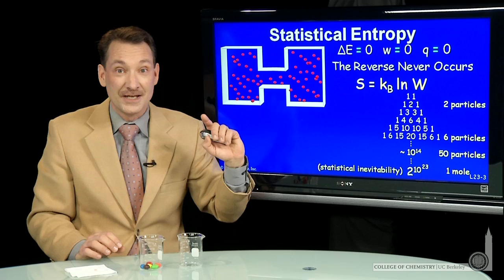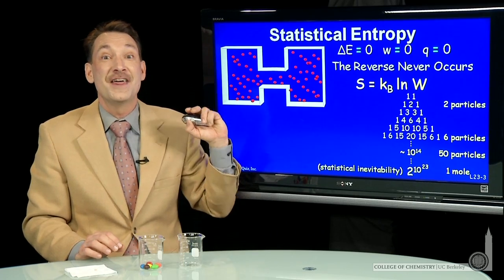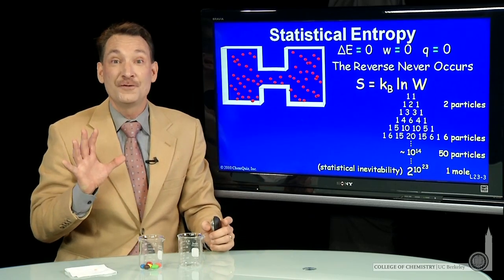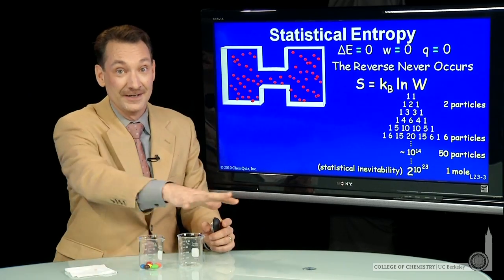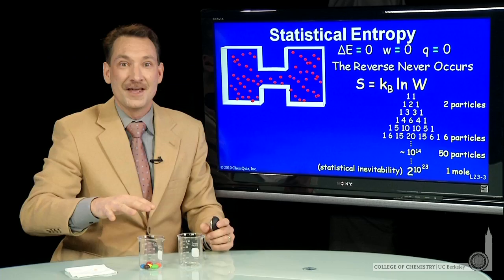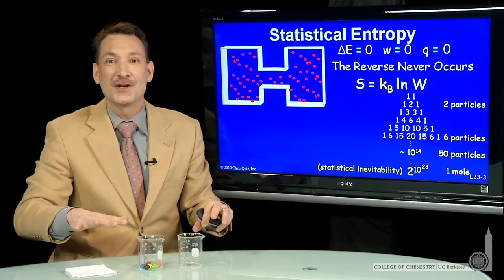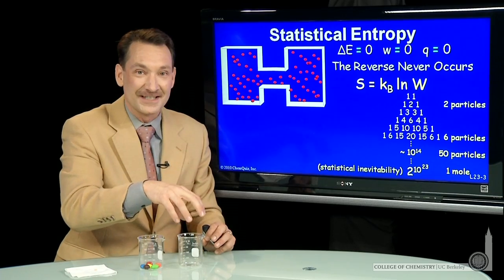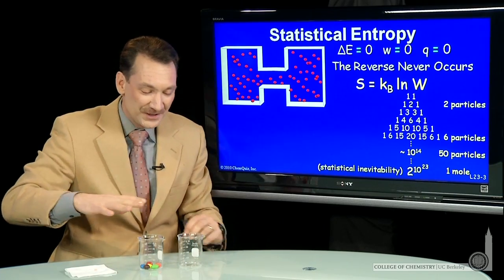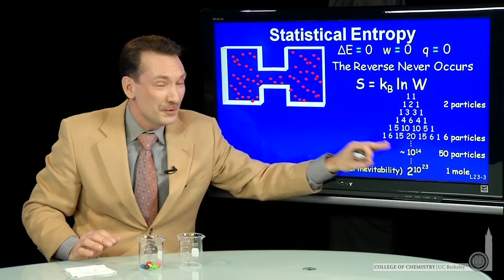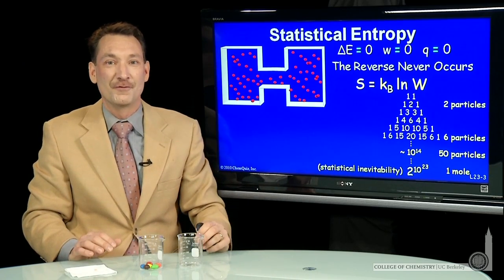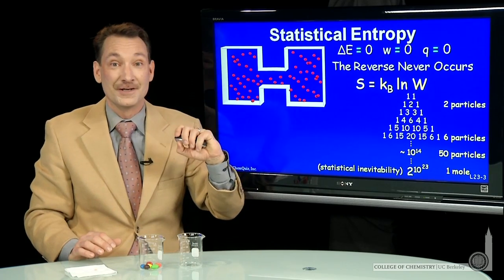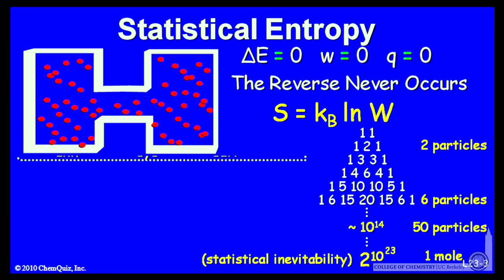When entropy increases, that's the favored direction of the system. Systems move towards the distribution of states. The more ways I can arrange energy is the important facet of the universe — I go towards distributing energy among the most possible number of ways. Large numbers of microstates are favored by the universe. That's the natural progression.